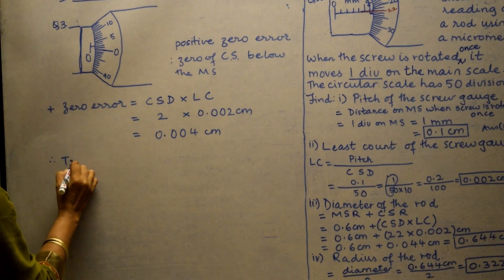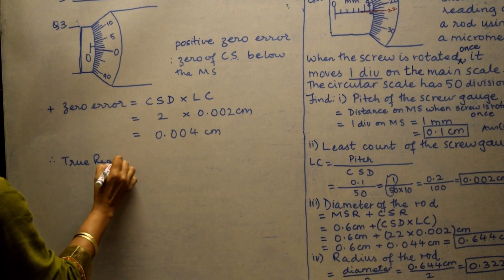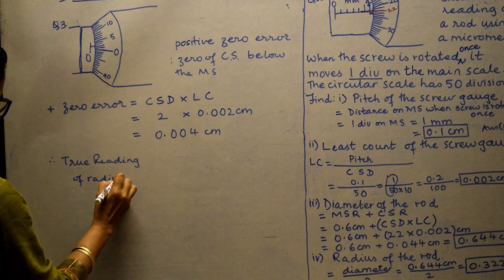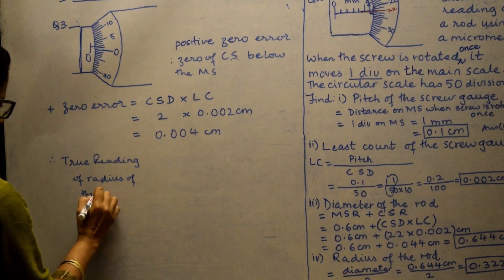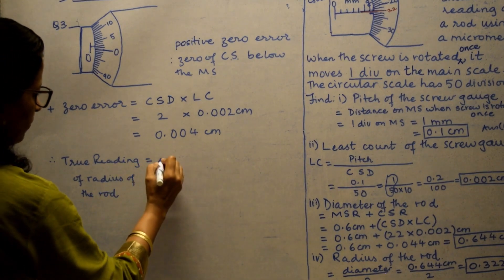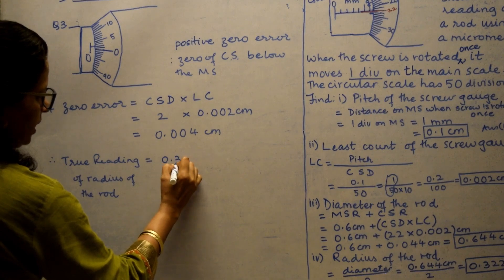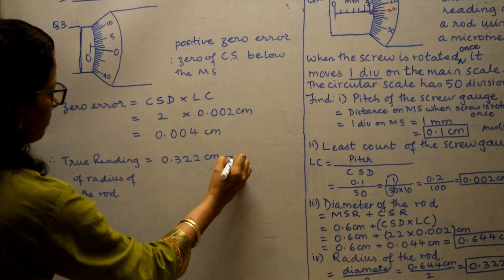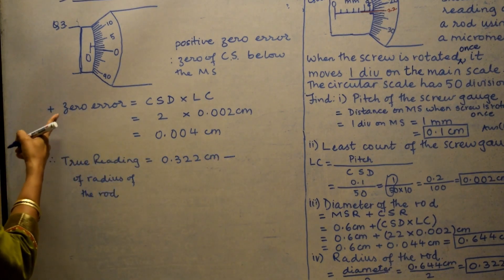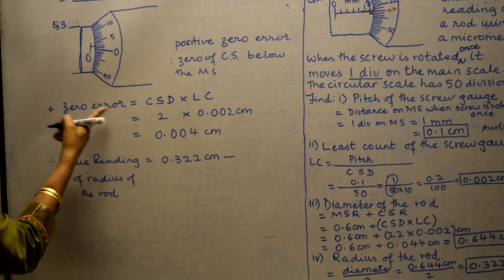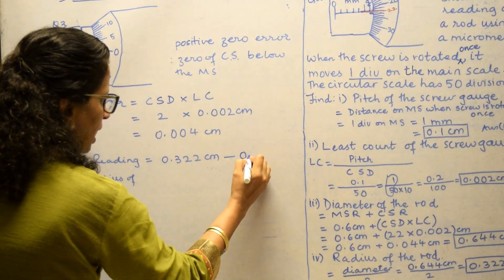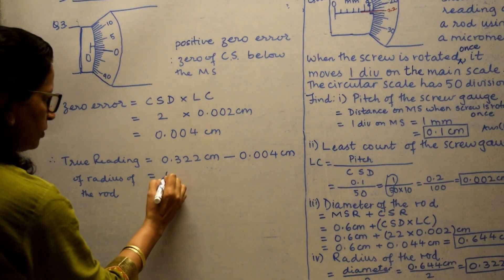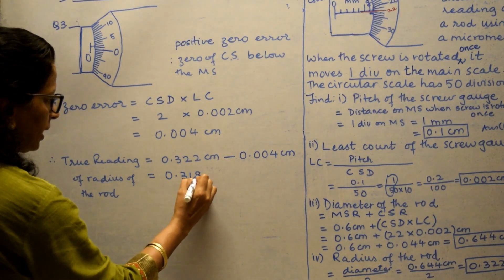Therefore, the true reading of the radius of the rod is what we found — 0.322 centimeter — minus the zero correction. Remember: the zero correction is negative when the zero error is positive. So we subtract 0.004 centimeter: 0.322 − 0.004 = 0.318 centimeter.